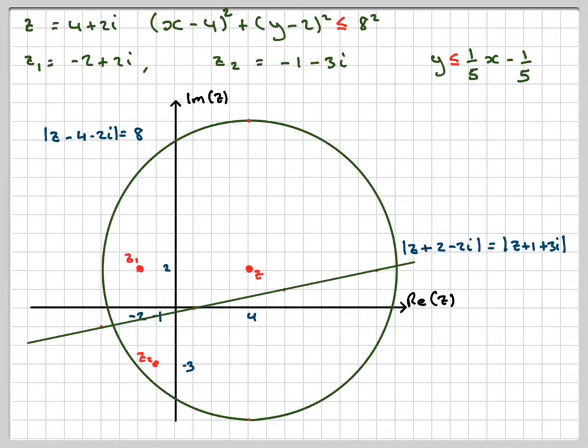Now, which side of the line do we need to shade? But first of all, less than or equal to 8 for the circle will be inside the circle, so either we're going to shade this bit here, or we're going to end up shading this bit here. So we need to test a point to see which side of the line we can shade.